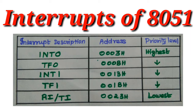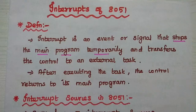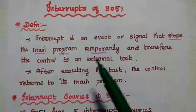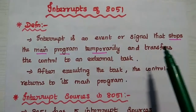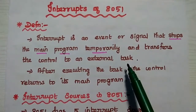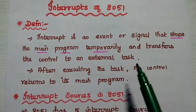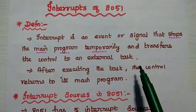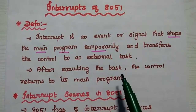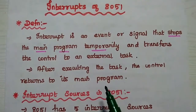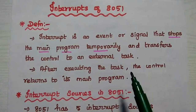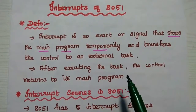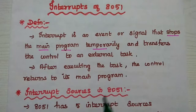Dear students, now we are going to discuss interrupts of AT51 microcontroller in detail. Let's start with the definition of interrupt. An interrupt is an event or signal that temporarily stops the main program execution and transfers the control to an external task. After completing that external task, the control returns to its main program. If you want to do any external task in the middle of the main program, we can use this interrupt.